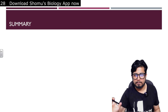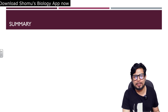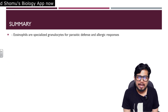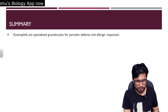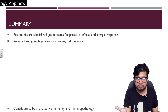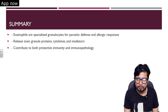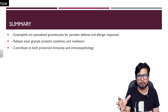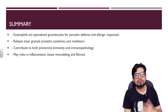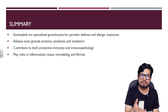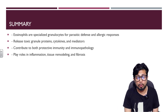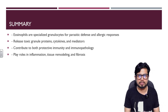In summary: eosinophils are specialized granulocytes active against parasitic infections and allergic responses. They release toxic granule proteins and cytokines and mediators. They contribute to both protective immunity and immunopathology, including fibrosis of wounds. They play roles in inflammation, tissue remodeling, and fibrosis. The percentage of eosinophils in circulating blood is very low, but when there is infection, they are proactive at the site of infection or inflammation.